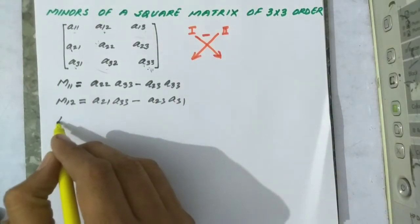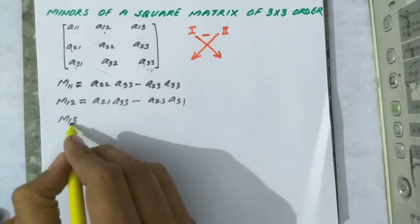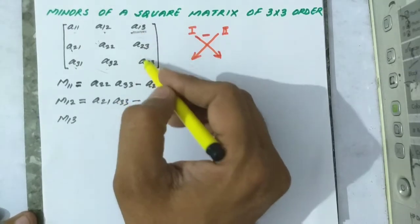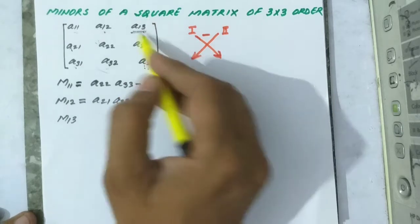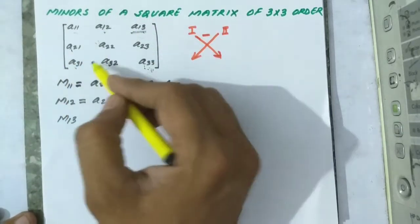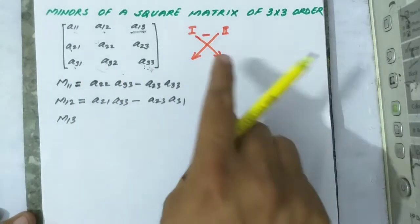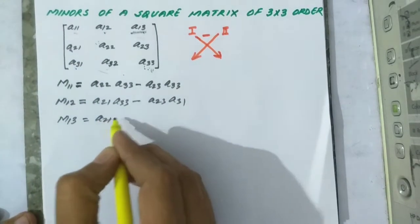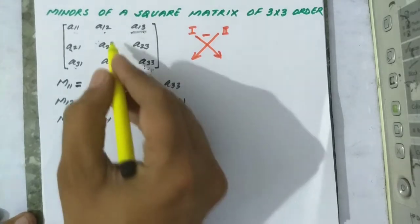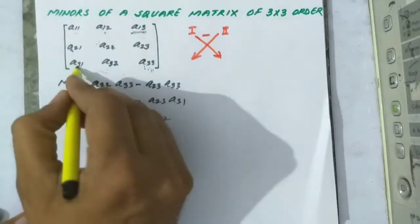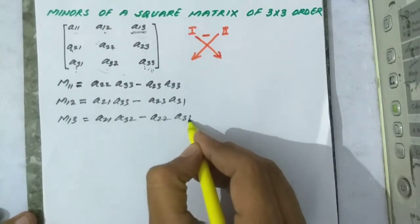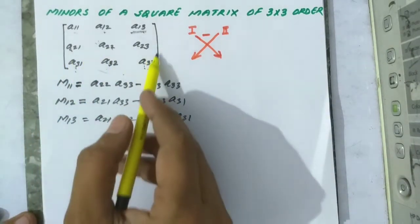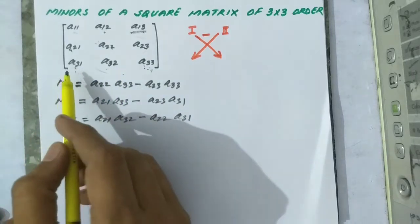Let us proceed to m13 — the minor of this element. We vanish this column and this row, leaving these four elements. The difference of the cross multiplication of these four elements gives: a21·a32 minus a22·a31. In the same way, we can find the minor of every element of this 3 by 3 square matrix.